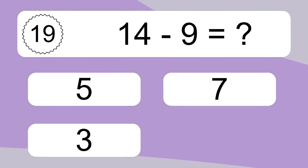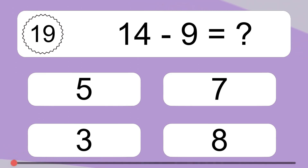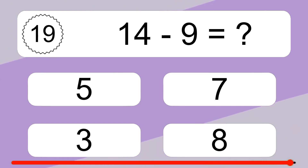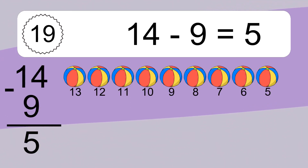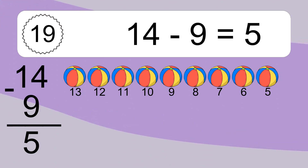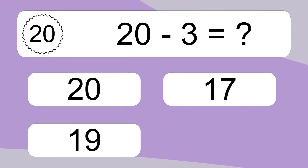14 minus 9 equals what? 14 minus 9 equals 5. Let's count it: 13, 12, 11, 10, 9, 8, 7, 6, 5.